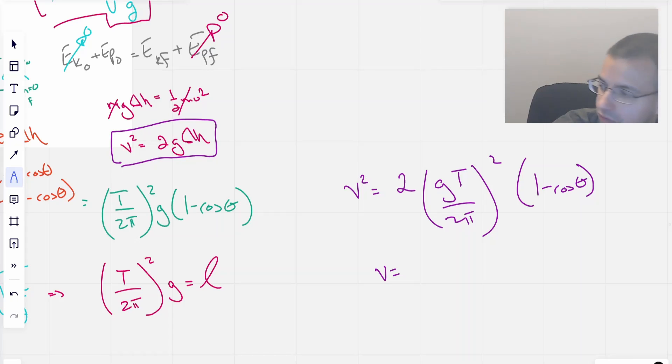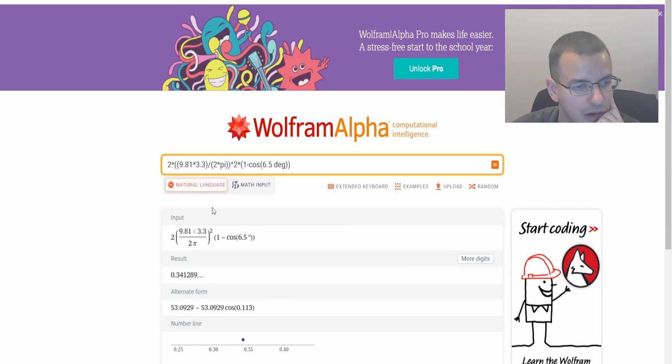1 minus cosine of theta. Theta is 6.5, but specifically 6.5 degrees. Because if you don't mention degrees, it might be assumed radians, which case fail. So we have 2 gravity times period over 2 pi squared. 1 minus cosine of theta. Yep, and it gives us that.